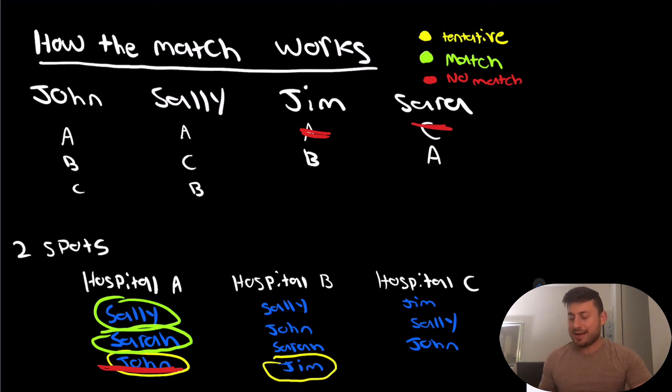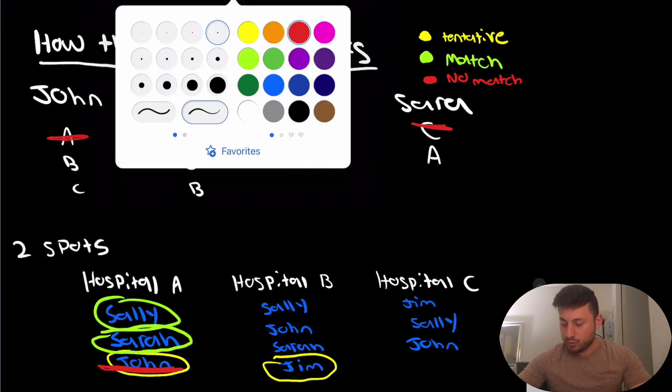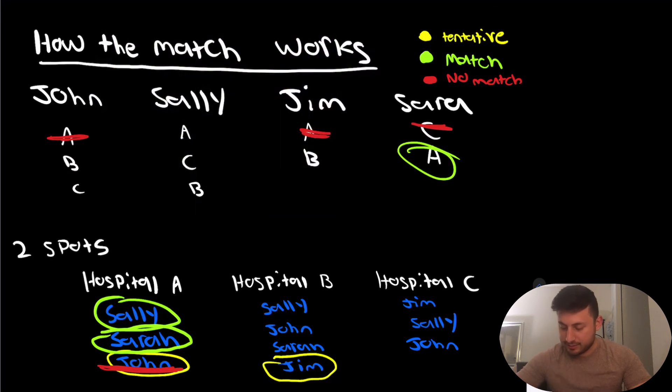So it's important to note that even though John had his first choice as Hospital A, and Sarah had her second choice as Hospital A, because Sarah was ranked higher on Hospital A's list, she gets preference to take that spot. So now that John was just removed as a tentative match from Hospital A, we're going to have to cross out John matching at Hospital A. We're going to say that Sarah matched there, Sally matched there, and we're going to move on to see if John can find a match.